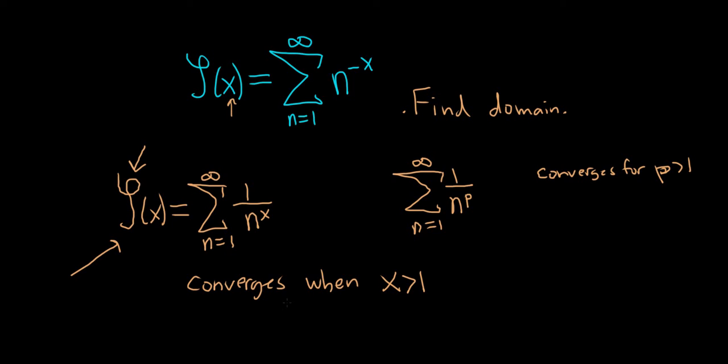So that's the domain. Because it's greater than, we'll use a parentheses. So 1 to infinity. And that would be the domain of the Riemann zeta function.